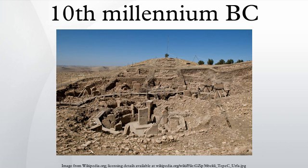9,564 BC: Destruction of Atlantis, according to Theosophic tradition. c. 9,500–9,000 BC: In Bryan Sykes' The Seven Daughters of Eve, the clan mother of Haplogroup J lives in Asia Minor or the Fertile Crescent. In chronological studies, the Holocene calendar, devised by Cesare Emiliani in 1993, places its epoch at 10,000 BC.